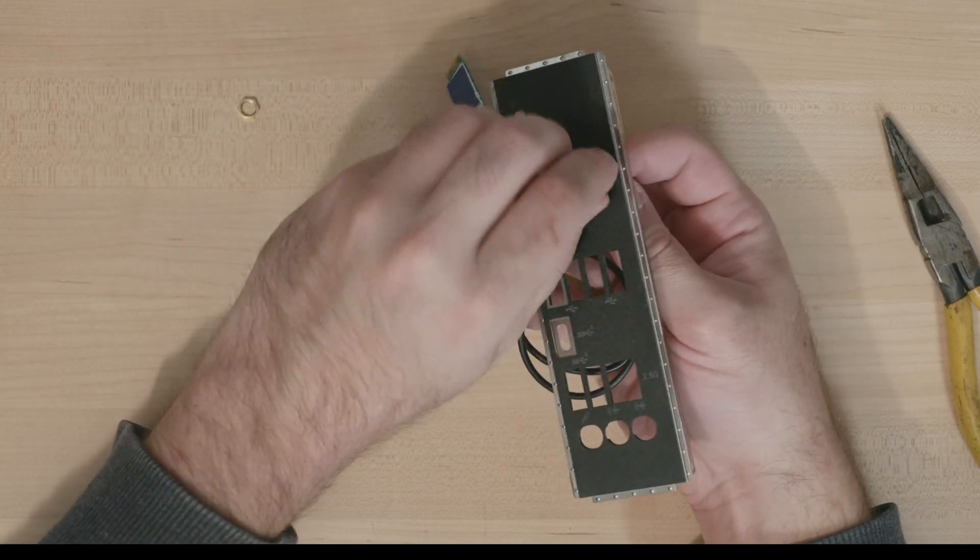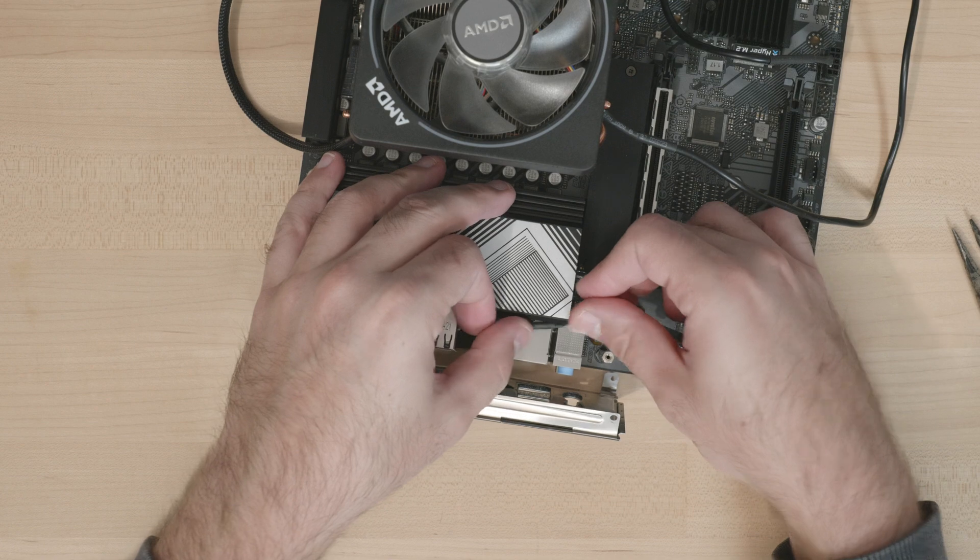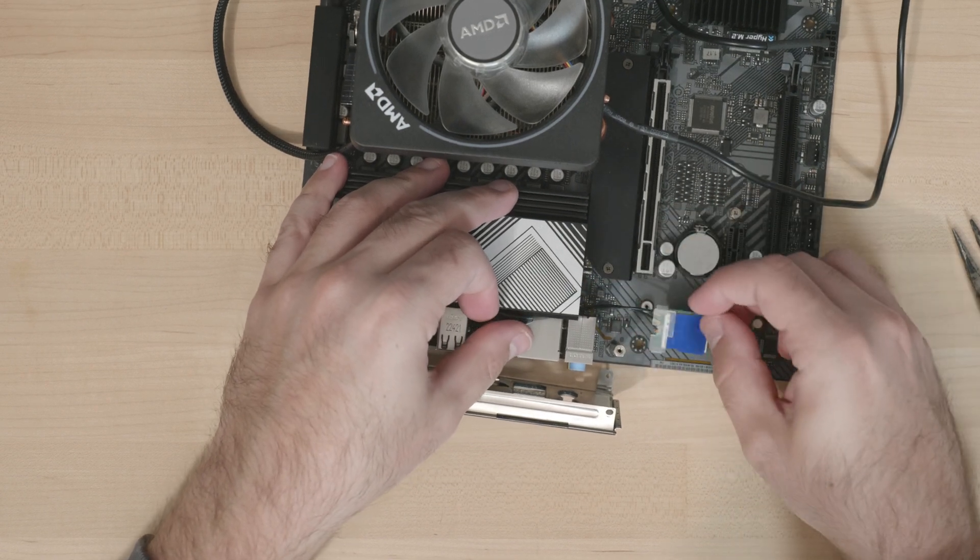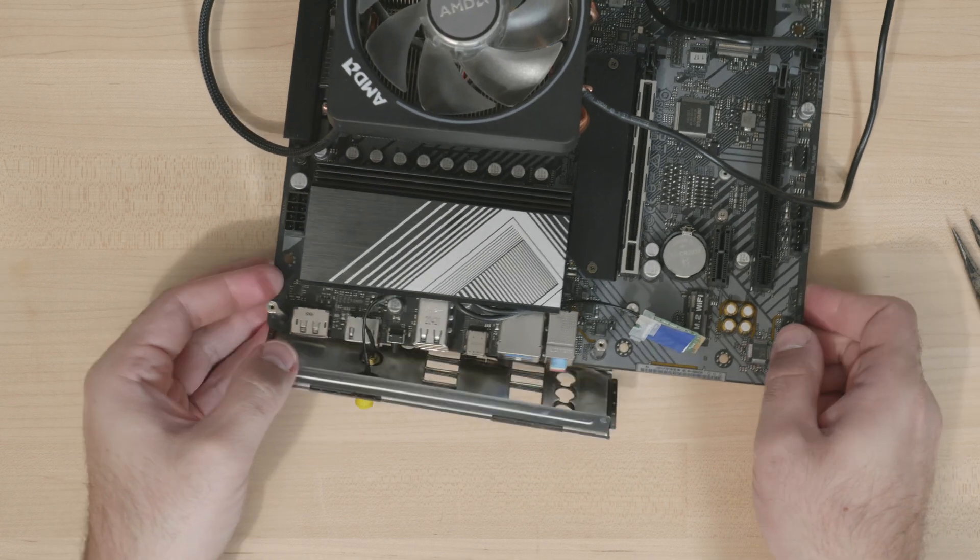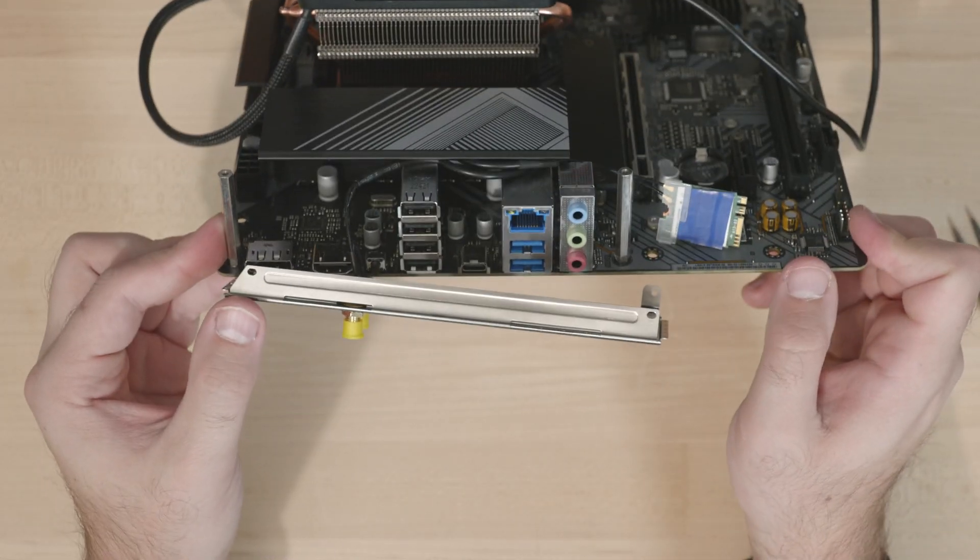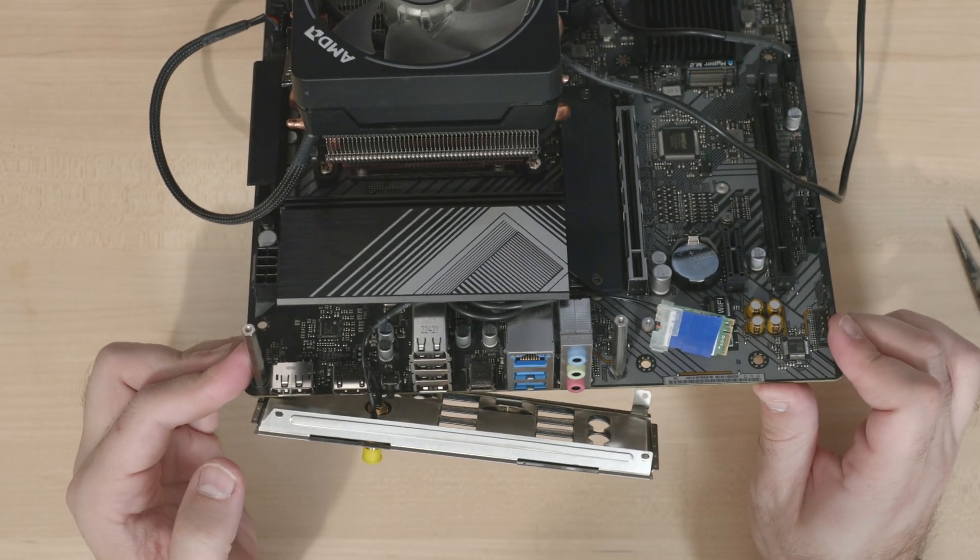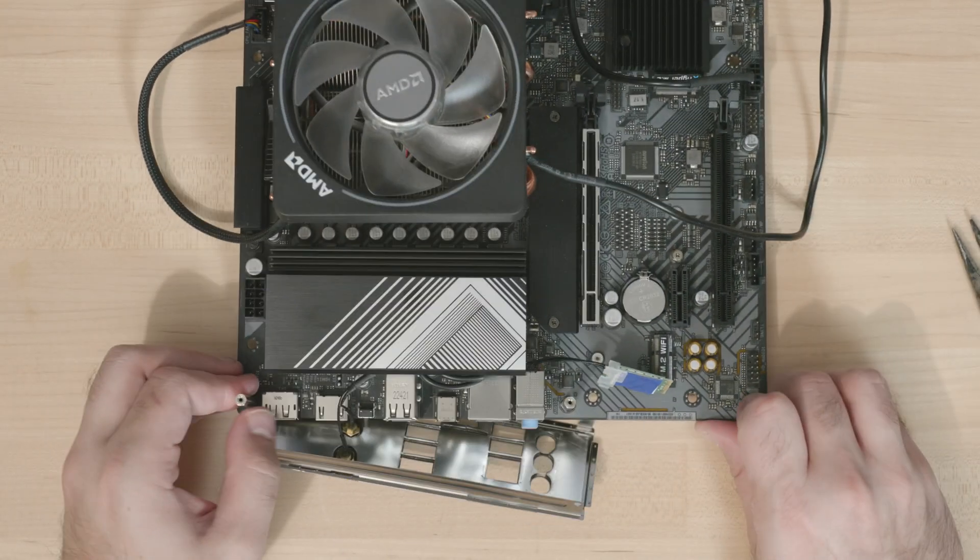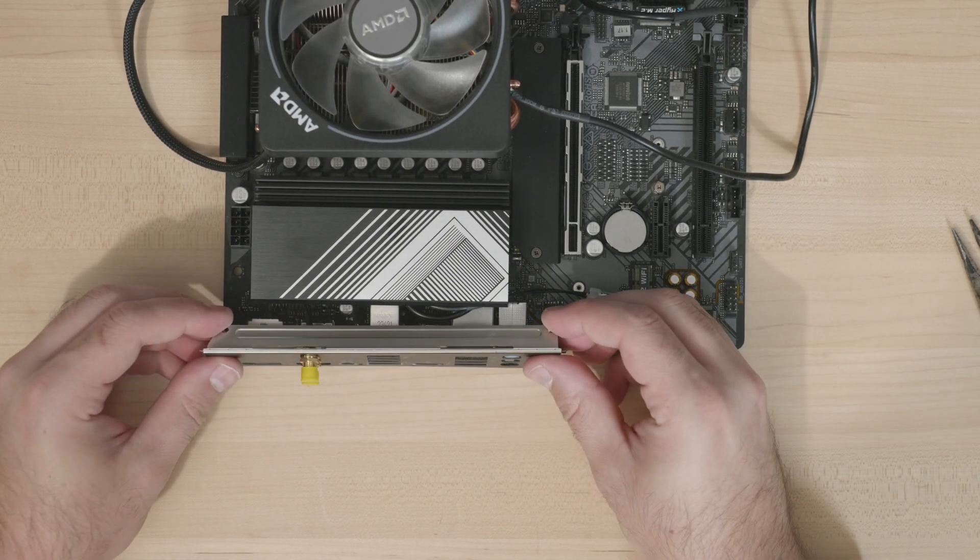First, you've got to reinstall the I/O shield now that you've got the antennas through, which is easy enough. Just put it back on the way that you took it off and install the card. With the excess cable, you'll have to find somewhere to put it. I'm going to tuck it just behind the rest of the I/O. I think it'll be safe there. It doesn't look like anything's back there that will generate so much heat that it could cause a problem for this cable.